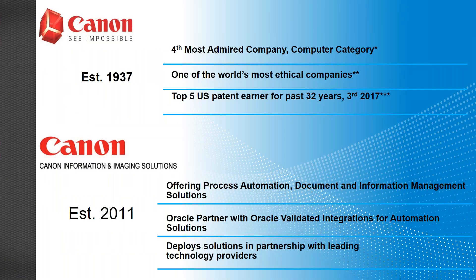Good afternoon, everyone. My name is Peter Lopes and I'm with Canon Information and Imaging Solutions. When people think of Canon, they think of cameras, printers, and copiers. We are Canon Information Imaging Solutions — the software division of Canon. Canon was established in 1937. This year we were awarded the fourth most admired company in the computer category by Fortune Magazine, and also nominated as one of the world's most ethical companies by the Ethosphere Institute.